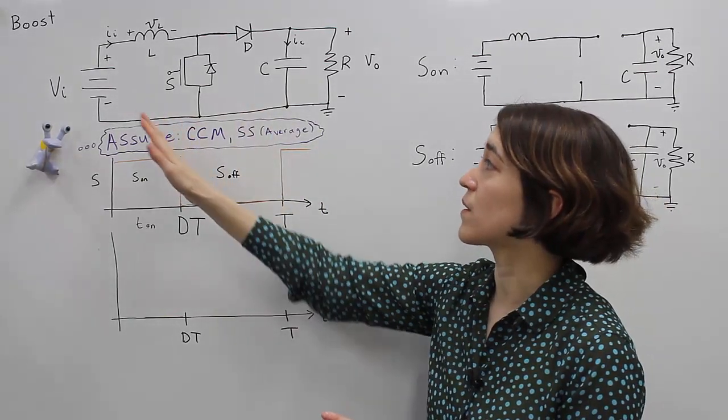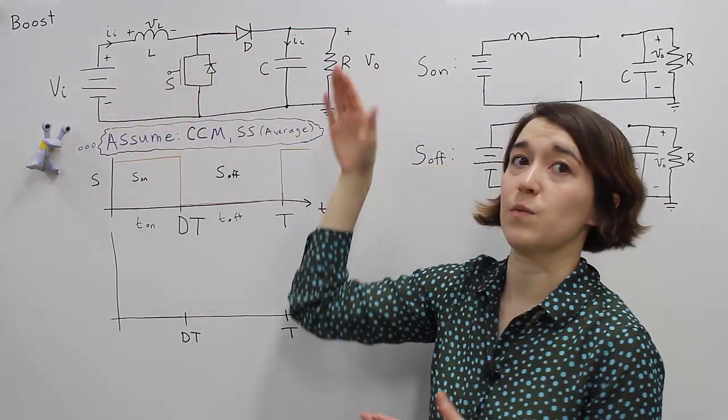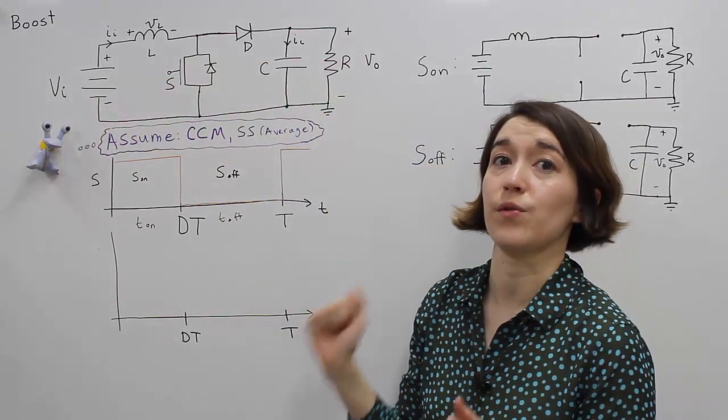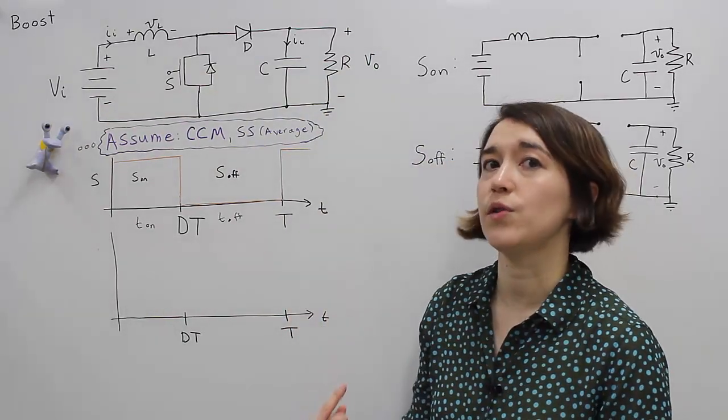And again we're boosting up the voltage so if this voltage is 10 volts the output must be greater than or equal to that voltage. So let's break this down again into our two different switching phases.